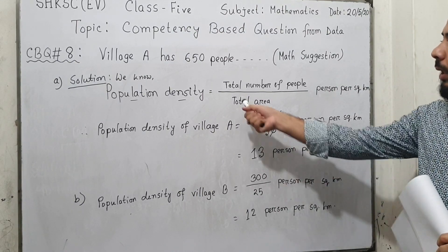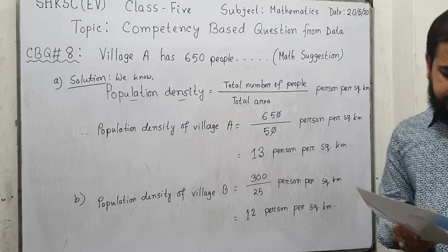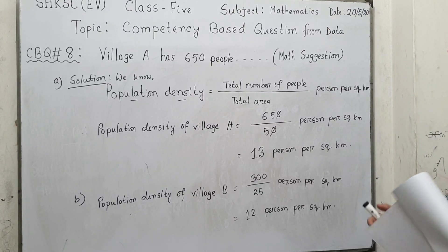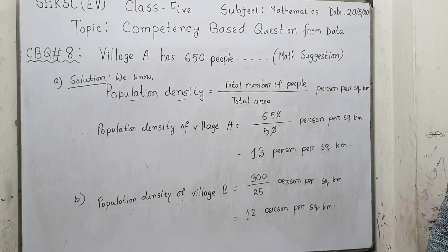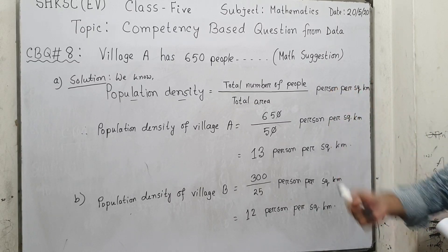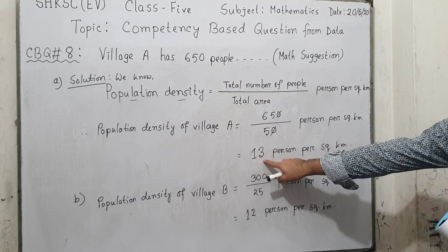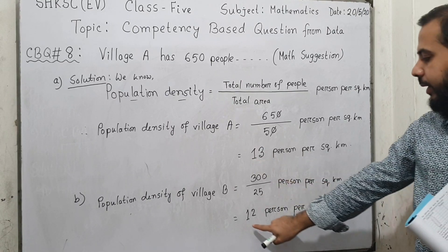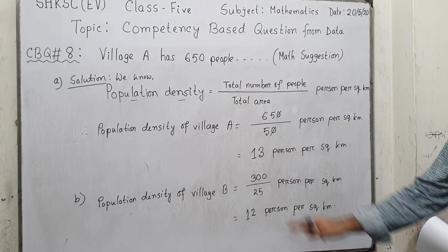Question 8C asks: in which village do people live more densely? More densely means which village has higher population density. Village A has a population density of 13 and Village B has 12, so people in Village A live more densely.